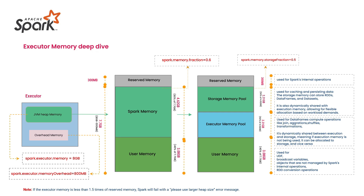One important note: if the executor memory is less than 1.5 times the Reserved Memory, Spark will fail with a 'please use a larger heap size' error. Since Reserved Memory is 300MB, 1.5 times of that is 450MB. So the minimum executor memory you should allocate is 450MB. Never allocate less than 1.5 times the reserved memory — that is, never go below 450MB for executor memory.